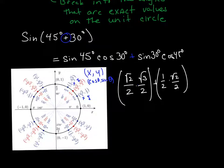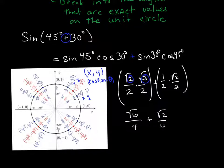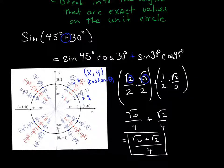Be careful — this is multiplication. When you multiply, you multiply numerators and denominators. You can multiply underneath radicals as long as they're both under radicals. So this gives us √6/4 plus √2/4. We have a common denominator, so adding those together gives us (√6 + √2) / 4.